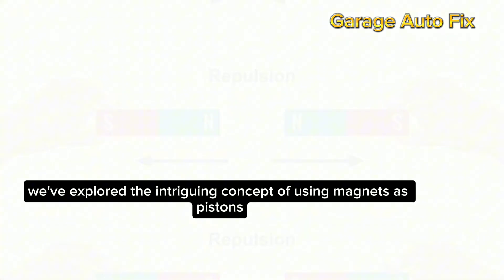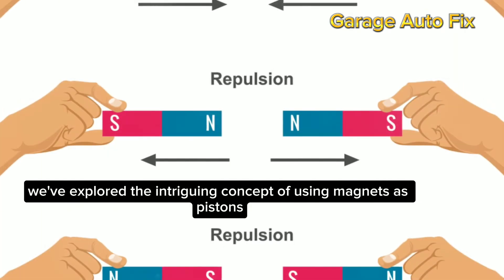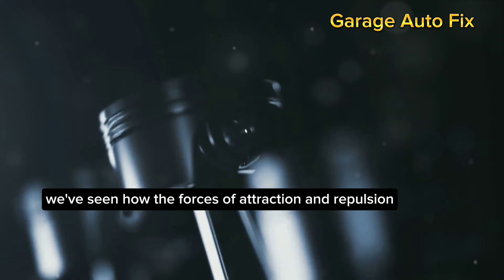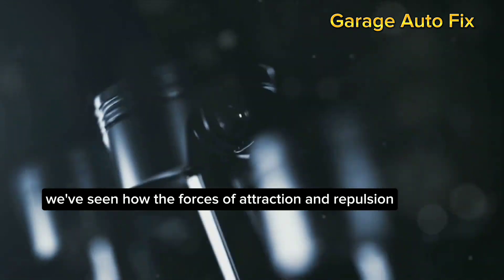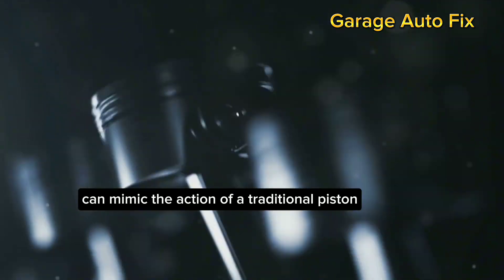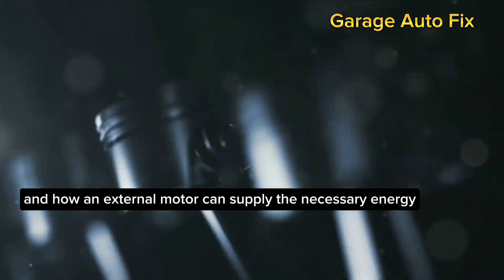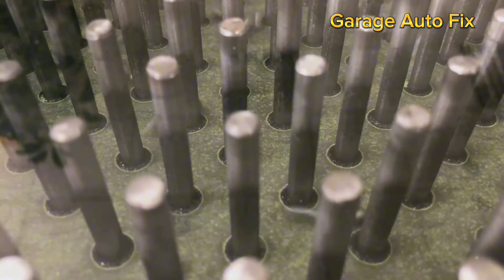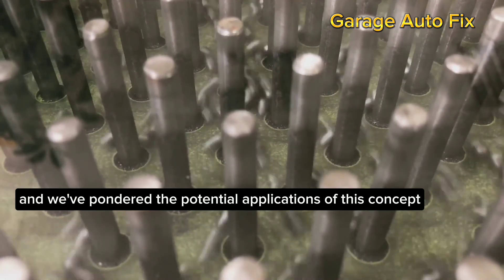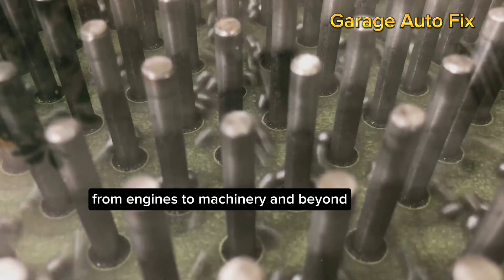In summary, we've explored the intriguing concept of using magnets as pistons. We've seen how the forces of attraction and repulsion can mimic the action of a traditional piston, and how an external motor can supply the necessary energy. And we've pondered the potential applications of this concept, from engines to machinery and beyond.